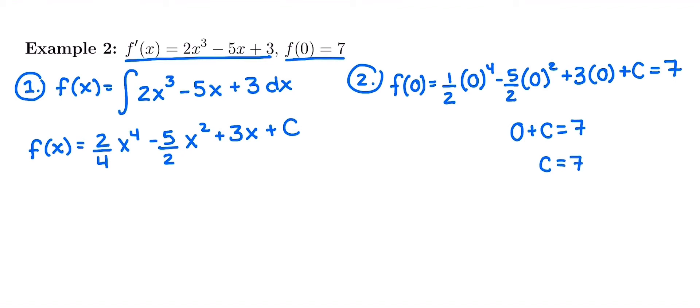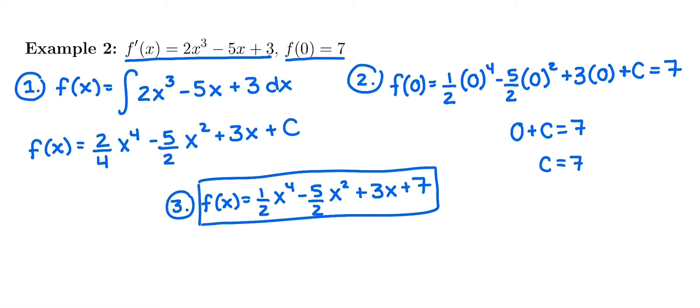Our third and final step, which isn't really a step, but you just want to make sure that you write your final answer at the end of all this and get full credit. The original function f(x) must have been 2/4 or really 1/2 x⁴ - 5/2 x² + 3x + 7. There's my final answer for the function that has that derivative that's given and goes through the point (0, 7).